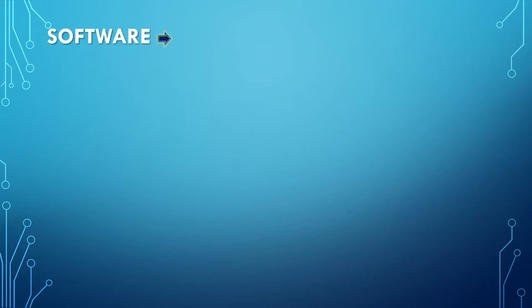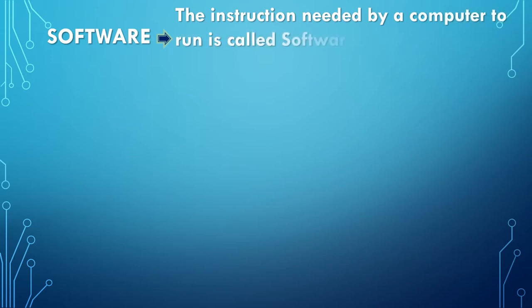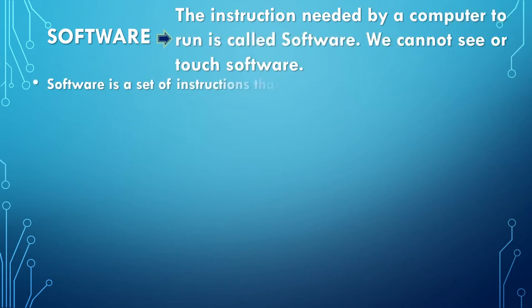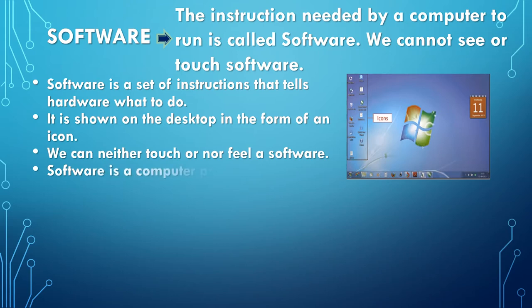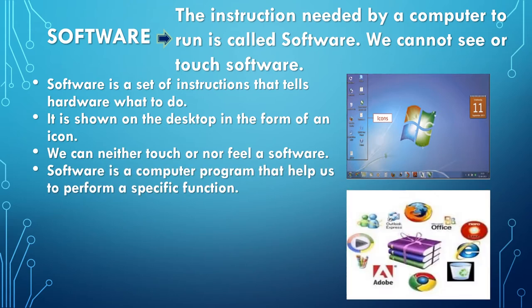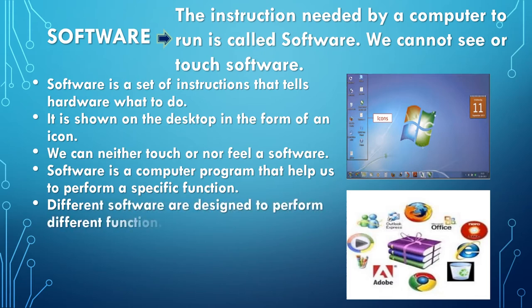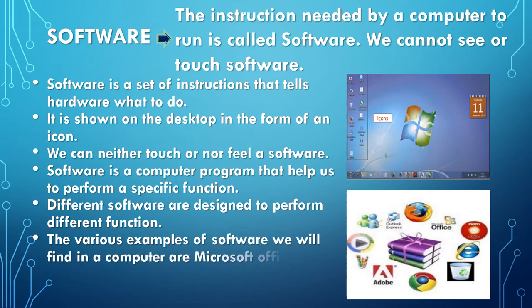Software: The instructions needed by a computer to run are called software. We cannot see or touch software. Software is a set of instructions that tells hardware what to do. It is shown on the desktop in the form of an icon. Software is a computer program that helps us to perform specific functions. Different software are designed to perform different functions. Examples include Microsoft Office, Adobe Acrobat, MS Paint, Internet Explorer, Video Media Player, etc.